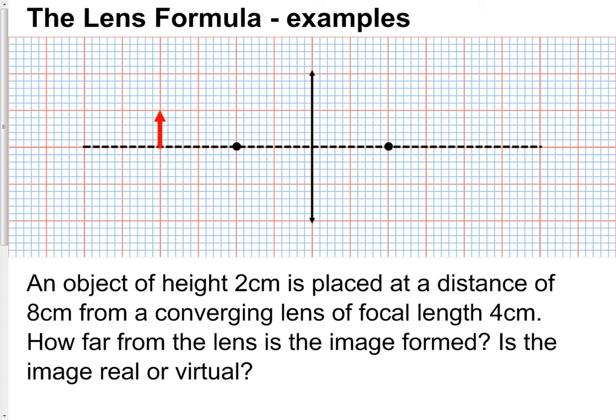Let's get straight on with an example. Here is a converging lens. An object of height 2cm is placed at a distance of 8cm from a converging lens of focal length 4cm. The scale I'm using is that one of these red squares is 2cm in both directions. These two black dots represent the focal points on either side of the converging lens. How far from the lens is the image formed? Is the image real or virtual?